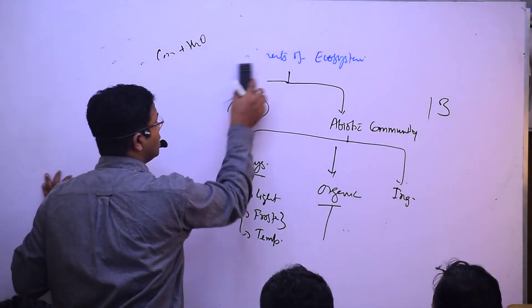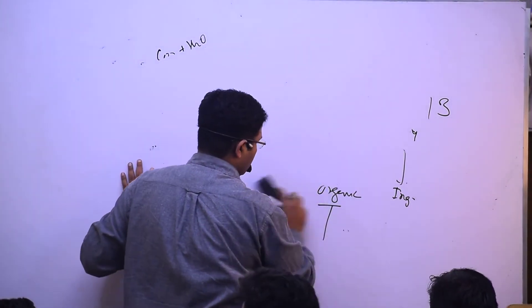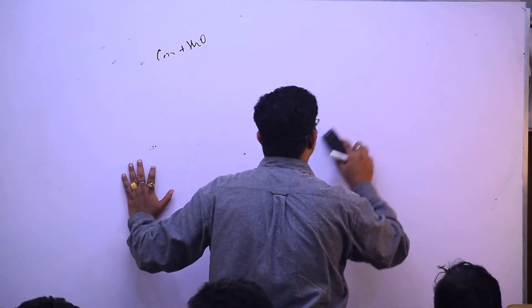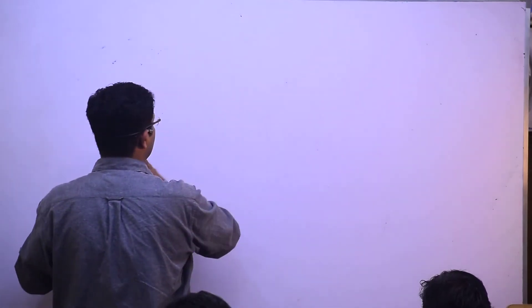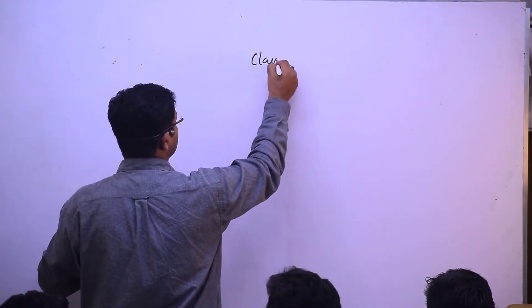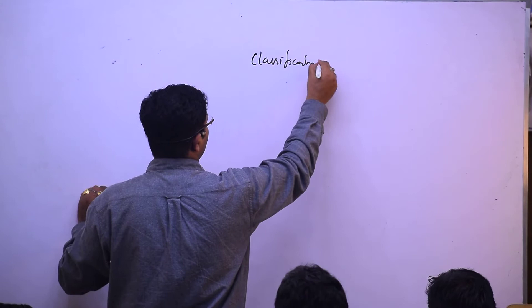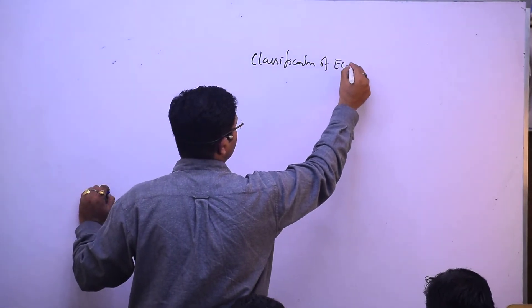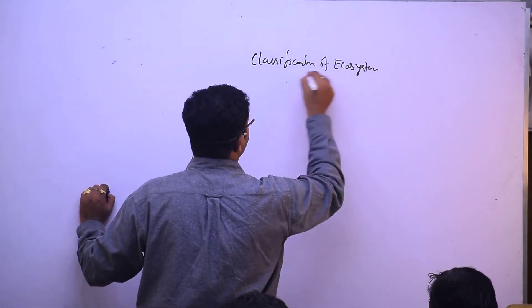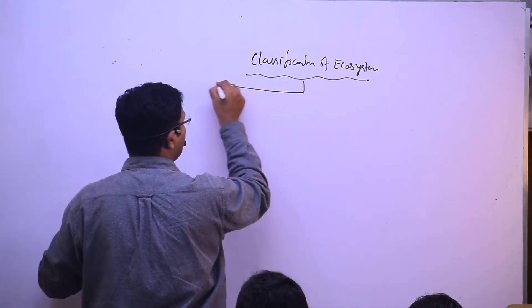We have seen components of ecosystem - all these things. You have already done the basics. First, next we have classification. Classification of ecosystem.